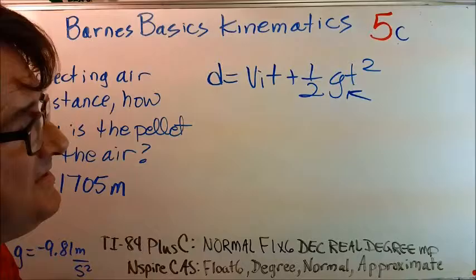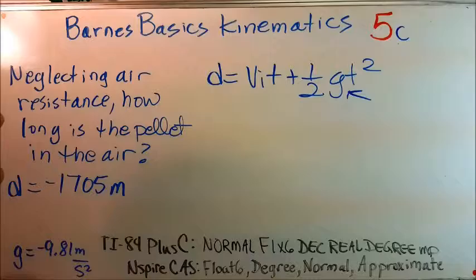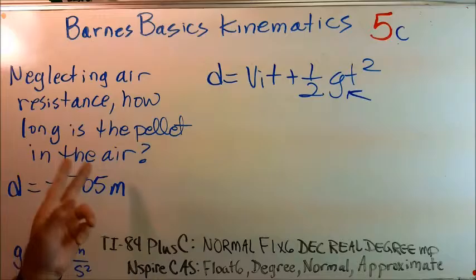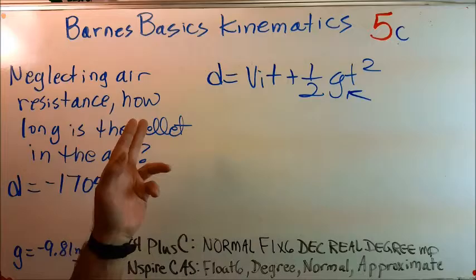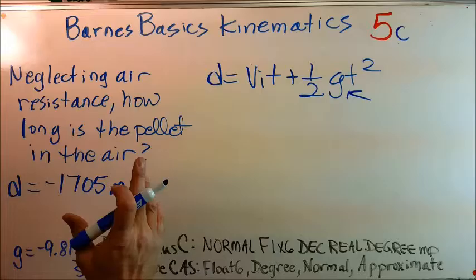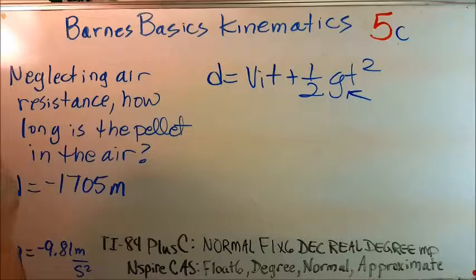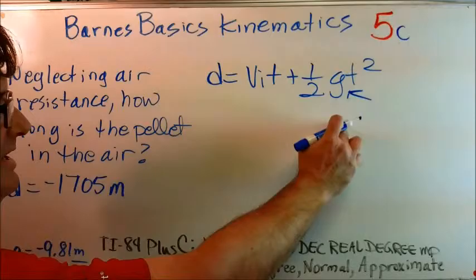Hi, this is Darrell Barnes with Barnes Basics and I'm on Kinematics Problem 5. This is where a person is shooting a pellet rifle at a mistletoe in a tree. It's near the holiday season, trying to knock the piece of mistletoe out of the tree without having to climb it and be dangerous. Here is 5C: neglecting air resistance, how long is the pellet in the air? The pellet, by the way, missed the branch and went straight up. In problem 5AB, we determined that it rose 1,705 meters into the air. Now, that's a positive direction, but if we're trying to figure out how long it's in the air,